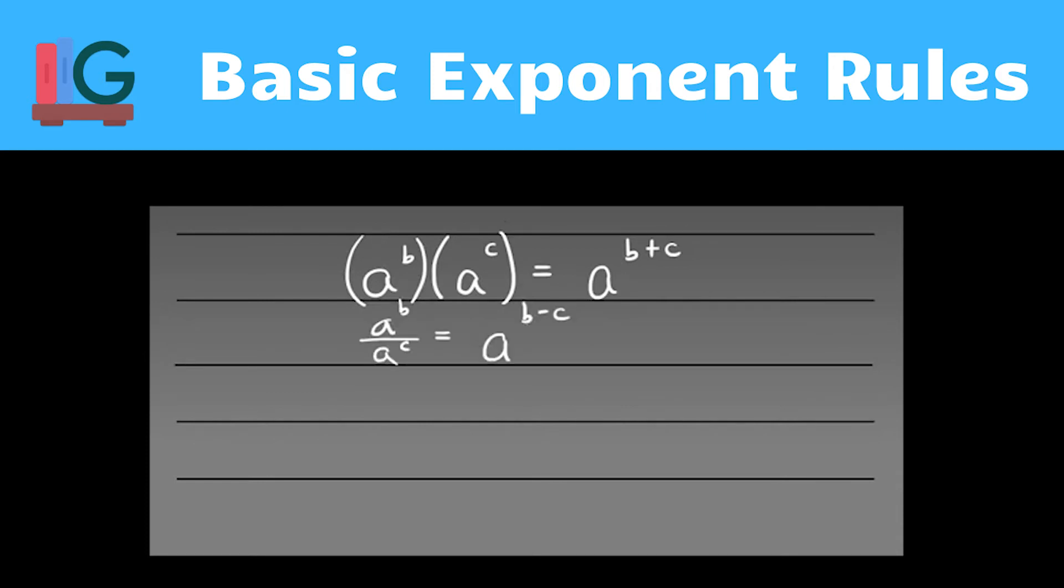There's another big rule and that rule will also have an opposite. This one's called the power of a power. For instance, if I had a to the b and all of that is raised to the c power, that's a power of a power because we already had a to the b and we're raising that to yet another power. In that situation you multiply: that'll become a to the bc.